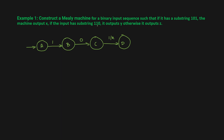What about if the input has substring 110? Starting in state a, you get 1 and go to state b. From b, you get another 1 and go to state e. Then you get 0 and go to state f. So for 110, the output is y. For any other condition, the output is going to be z.